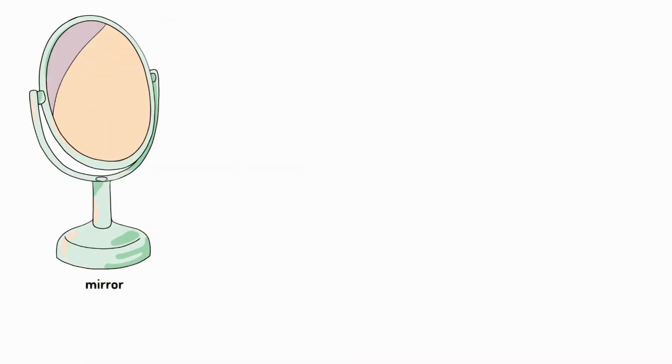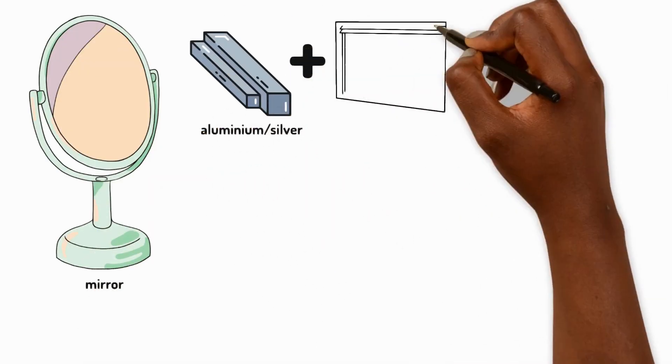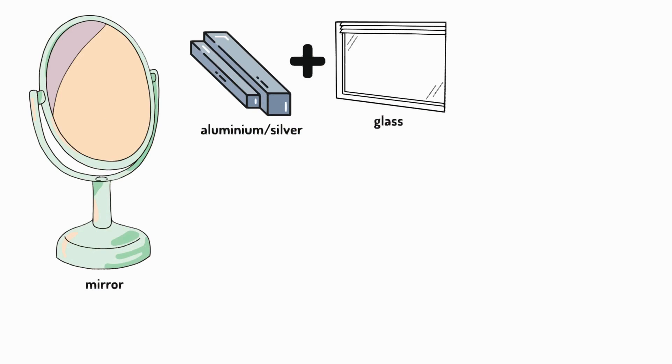Mirrors are made from metal such as aluminium or silver combined with glass. They have polished smooth and shiny surfaces that reflect light so evenly that we can see a perfect reflection of objects placed in front of them.